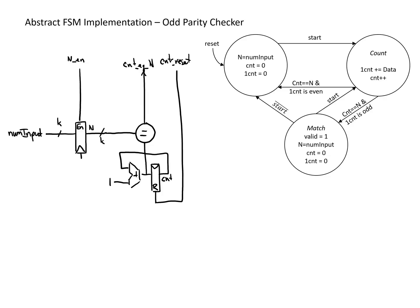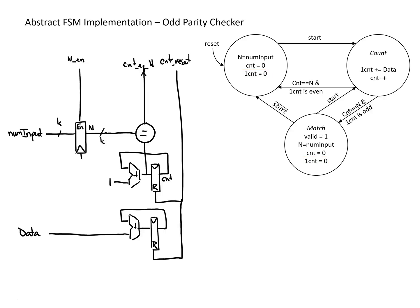We also have the second counter, which counts the number of ones in our inputs. We need a register for this as well, along with an adder to calculate its next value. Unlike the first counter which increments every time we're in the count state, this one increments based on the value of data, so we feed in the data value. This counter also needs to be reset — it resets in both the match state and the default state — so we use the same counter_reset signal to reset it.